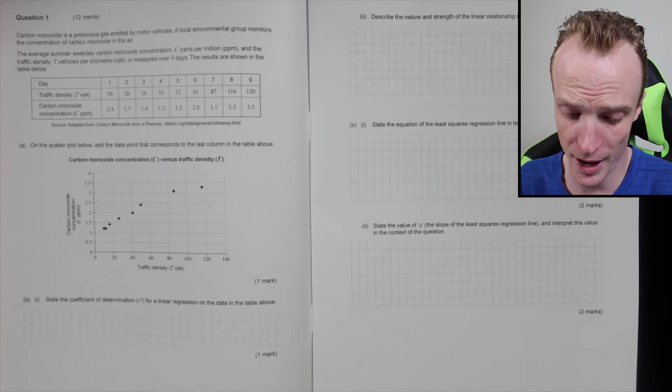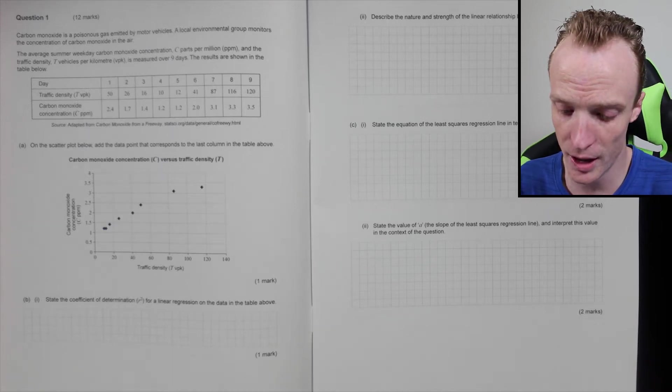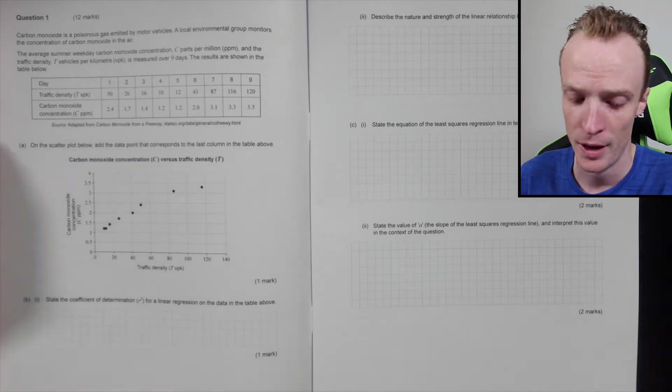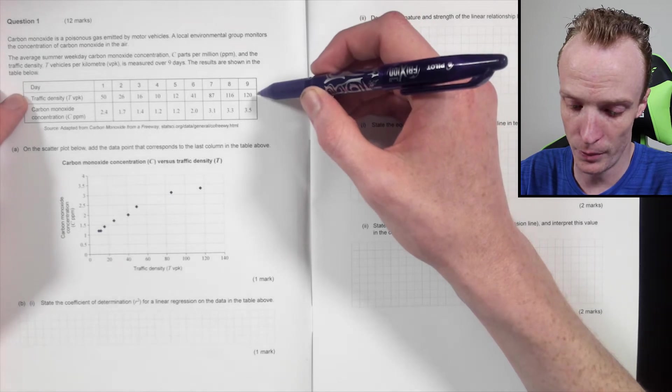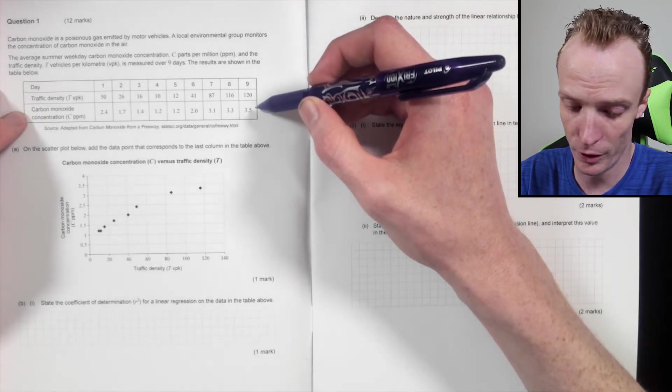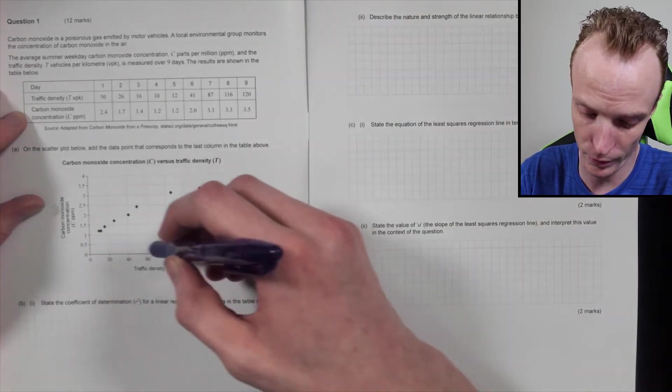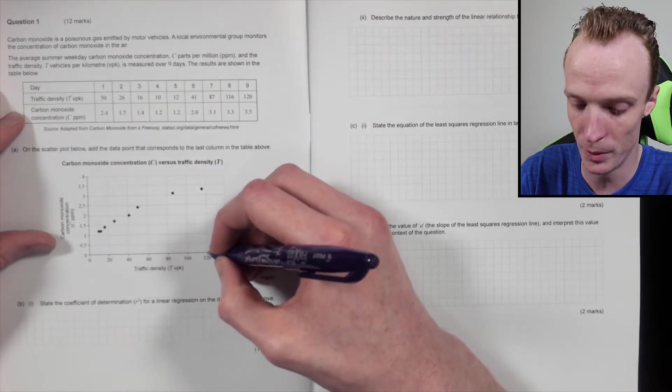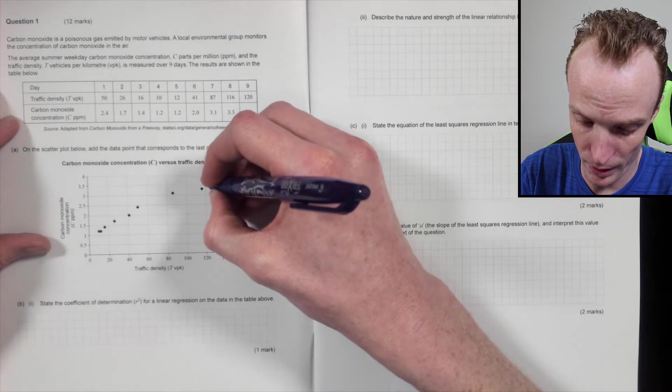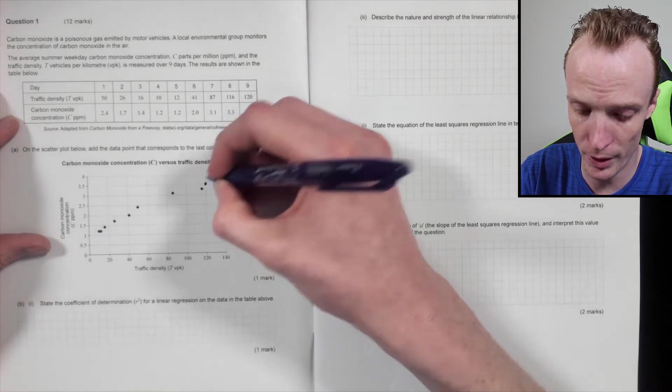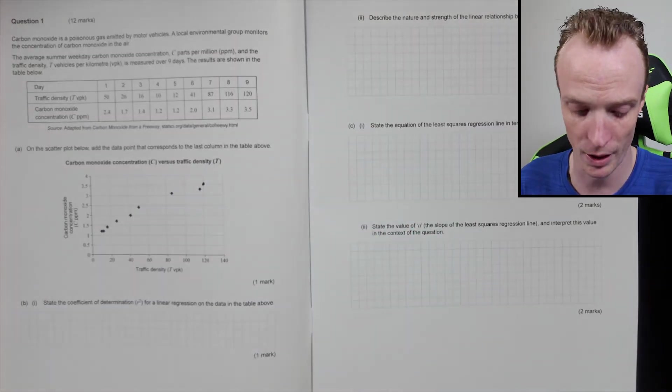On the scatter plot below, add the data point that corresponds to the last column in the table above. So if we're looking at the last column of the table, it's this one just here. We've got a traffic density of 120 and carbon monoxide concentration of 3.5, so traffic density of 120 is here, 3.5 will be about here, so they'll be looking at that point to be added just on the scatter plot like that.